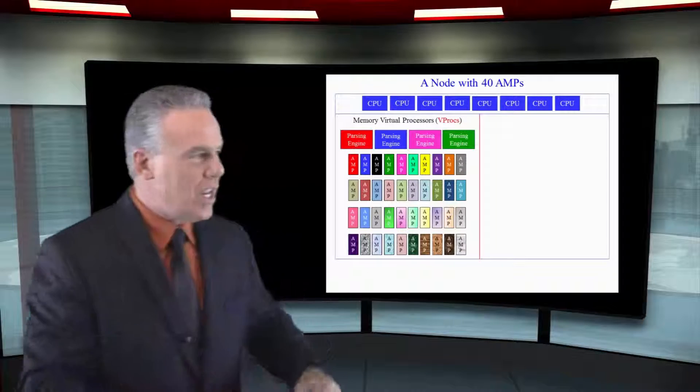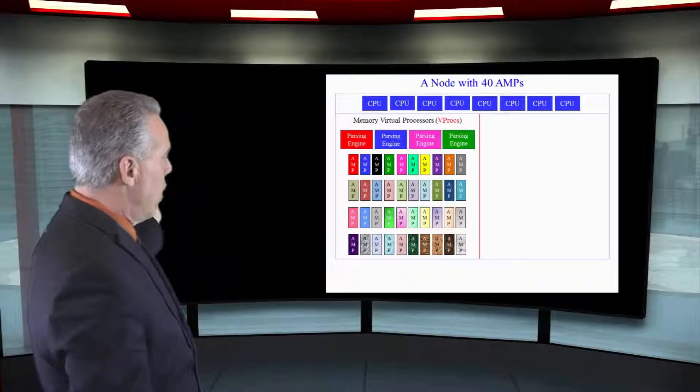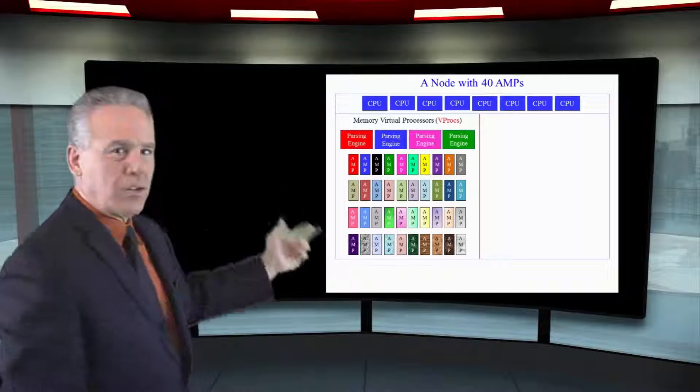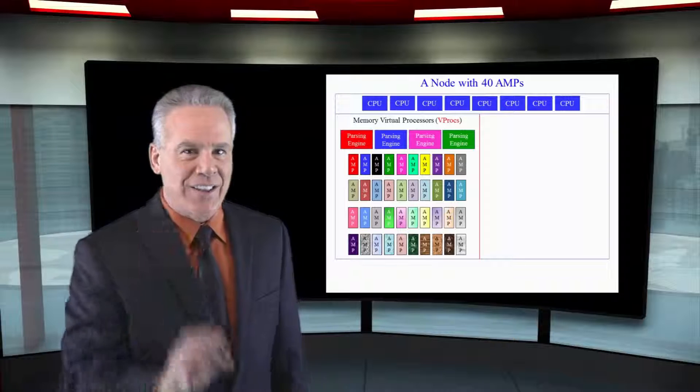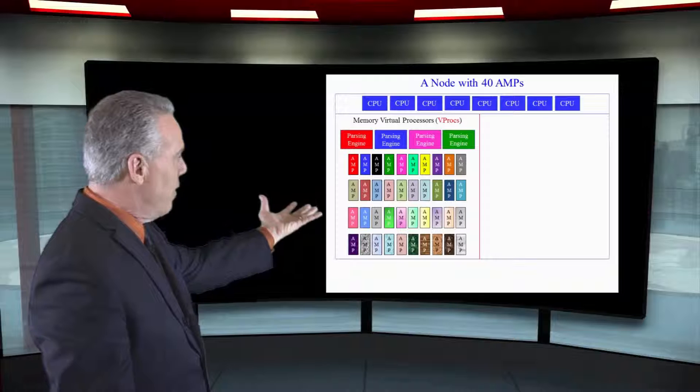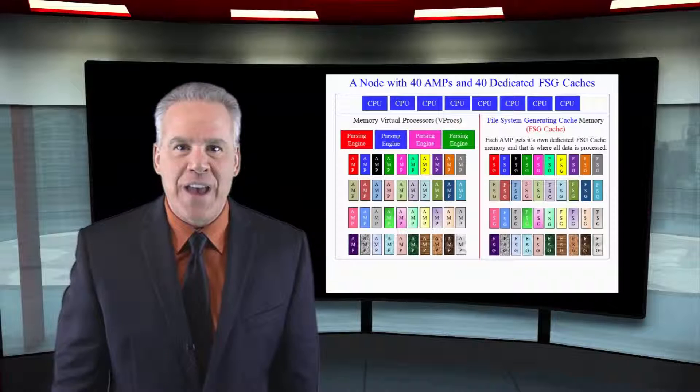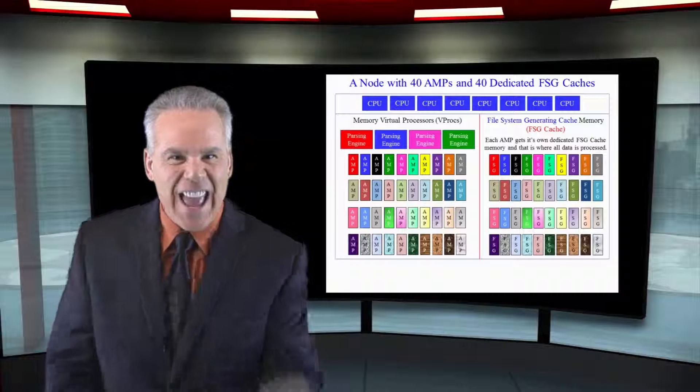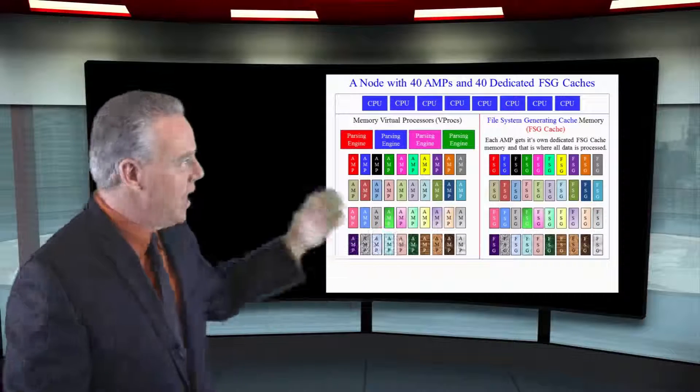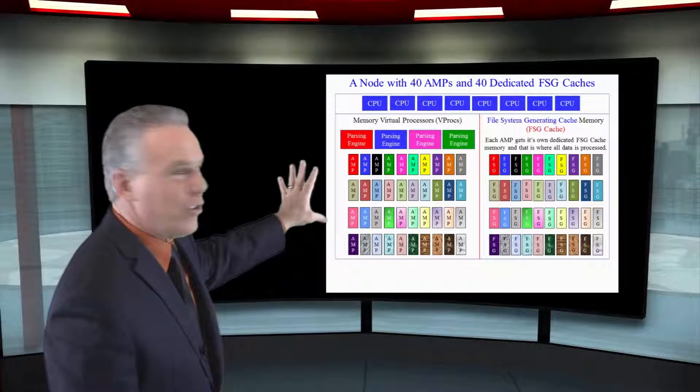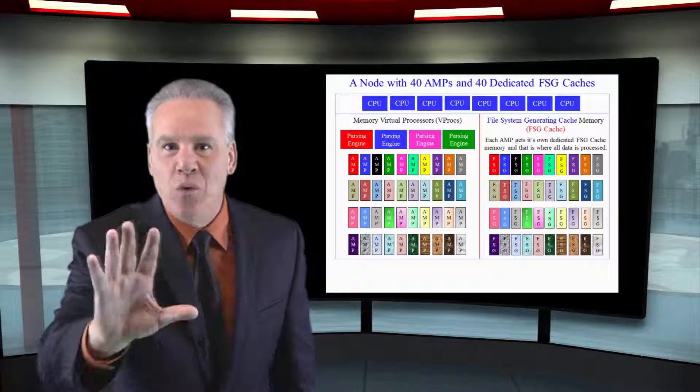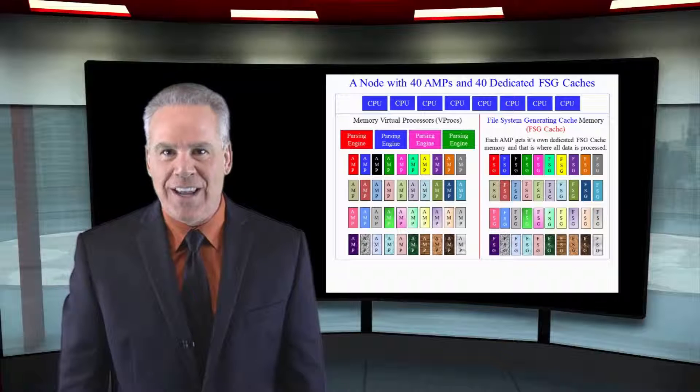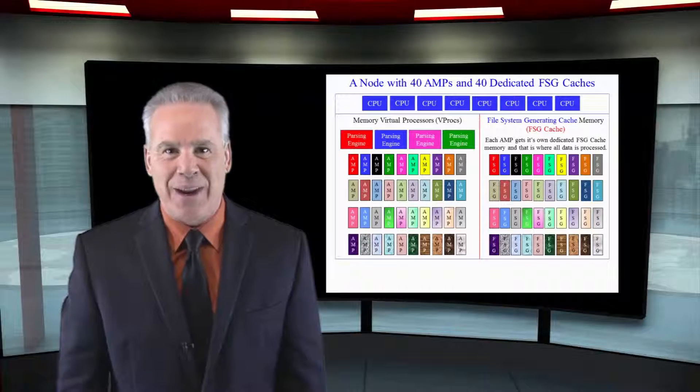As you can see here, inside our node is 40 amps and 4 parsing engines. Next to that, in other portions of the memory, is FSG cache, file system generating cache and each amp is going to get its portion of file system generating cache that it and only it can access. That's what I want you to see and understand right now.